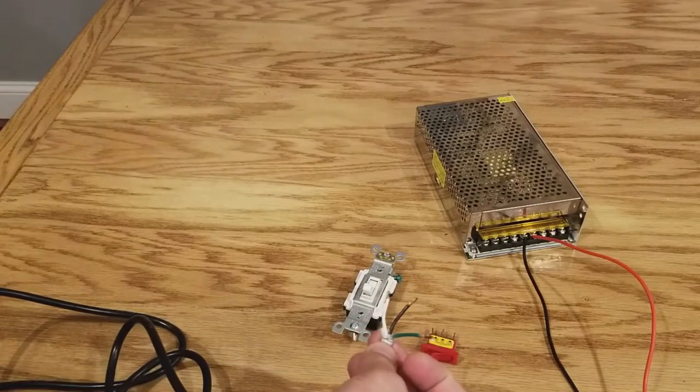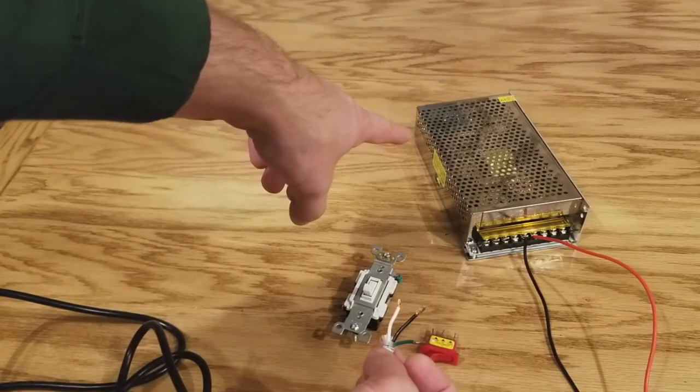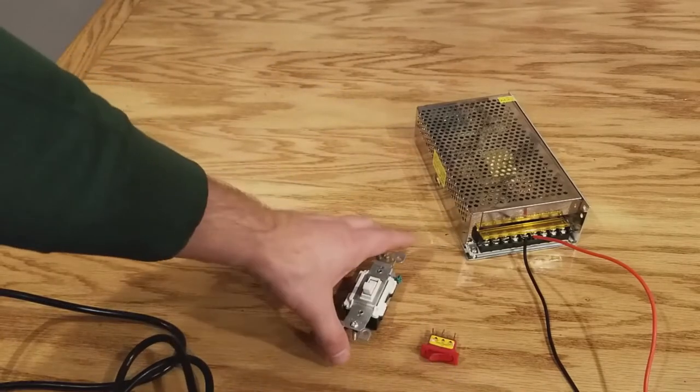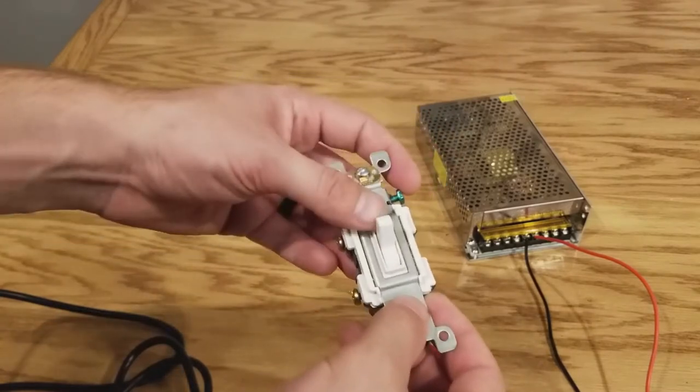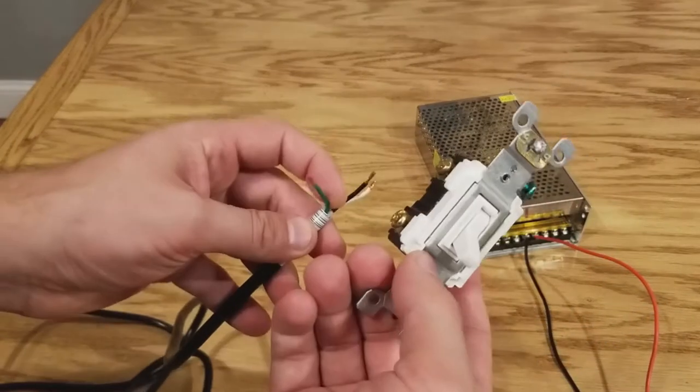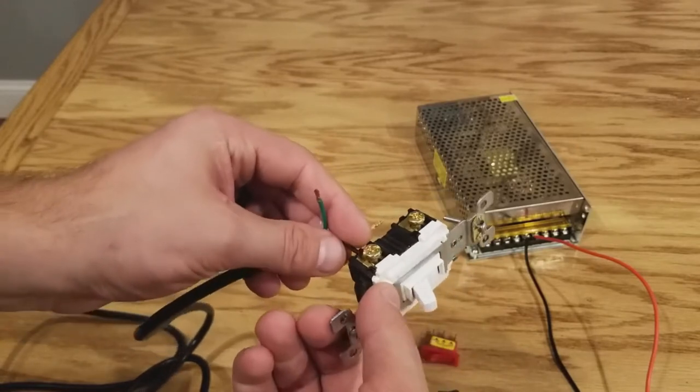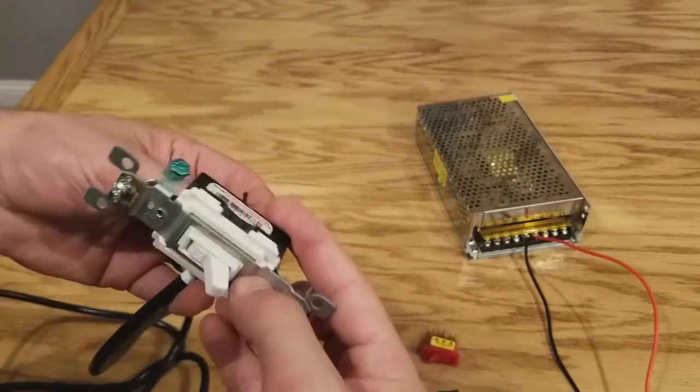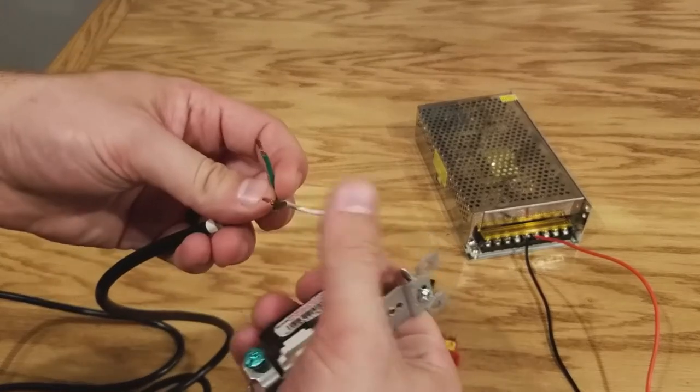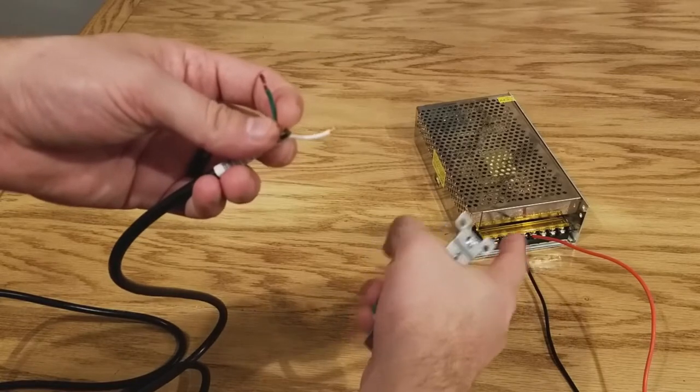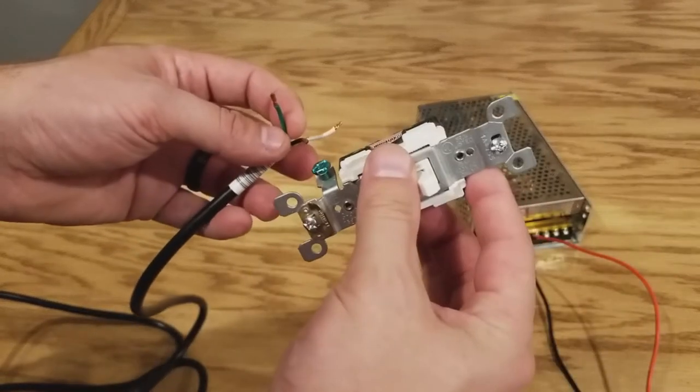Now if you want to actually wire this into a switch to turn this off, for example when you're not using it, you'd want to run it to something like this. If you don't know how to run the light switch, we're just going to teach you how to do it real quick. It's very simple. You're going to take your live wire and plug it into one of the gold sides. You're going to take your ground, your green, and plug it up here. Your neutral is going to just go directly to here. It's not going to go to this switch at all.